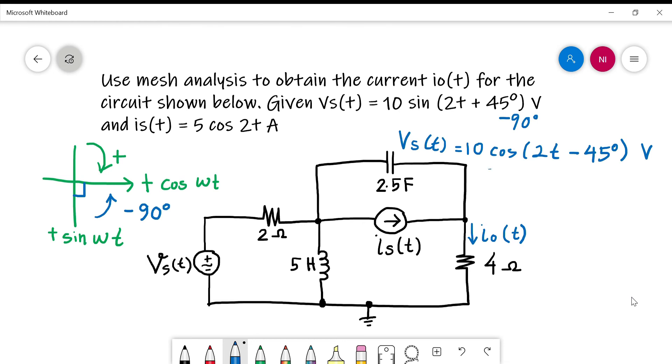For VST, when we convert to frequency domain it becomes Vs equals 10 angle -45 degrees V. And for IS it becomes 5 angle 0.